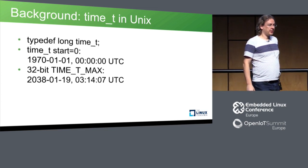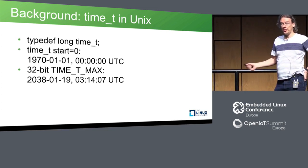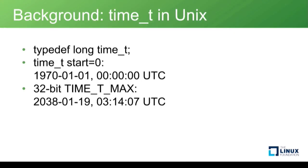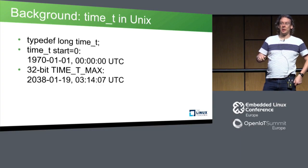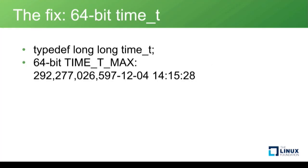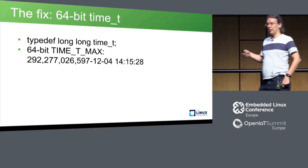The basic problem is that there's a type called time_t which is fundamental to all Unix systems. It counts the seconds since 1970, and that means that in the beginning of 2038 it will overflow, and since it's a signed type it will become a negative number and we go back to the year 1902, which causes all kinds of problems. The only fix that really works is to make it a 64-bit type, which gives us basically to the end of the universe.